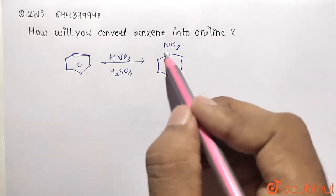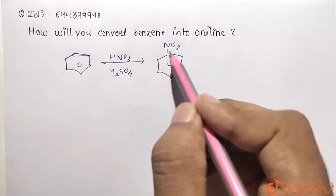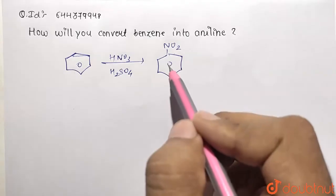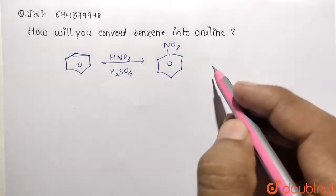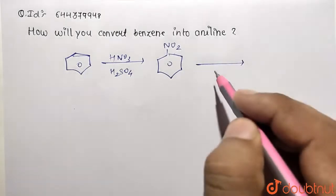Now what you need to do is you need to do the reduction of this nitro group to correspondingly convert into the NH2 group and this molecule can become aniline, what we are required to find. So you are going to do reduction.